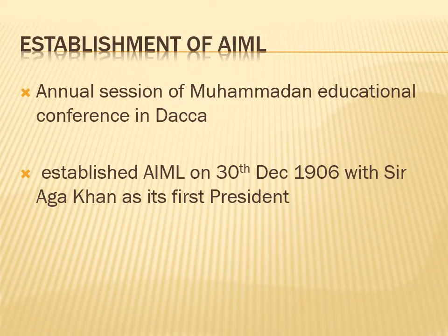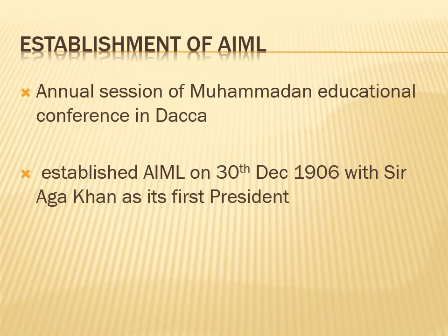In December 1906, the annual session of the Mohammedan Educational Conference was held in Dhaka. In that conference, the delegates decided to establish a separate political party for Muslims. This demand was accepted and supported by all delegates. Thus, All India Muslim League was established. Aga Khan was elected as its first president and Majid Belgrami was elected as its first general secretary.